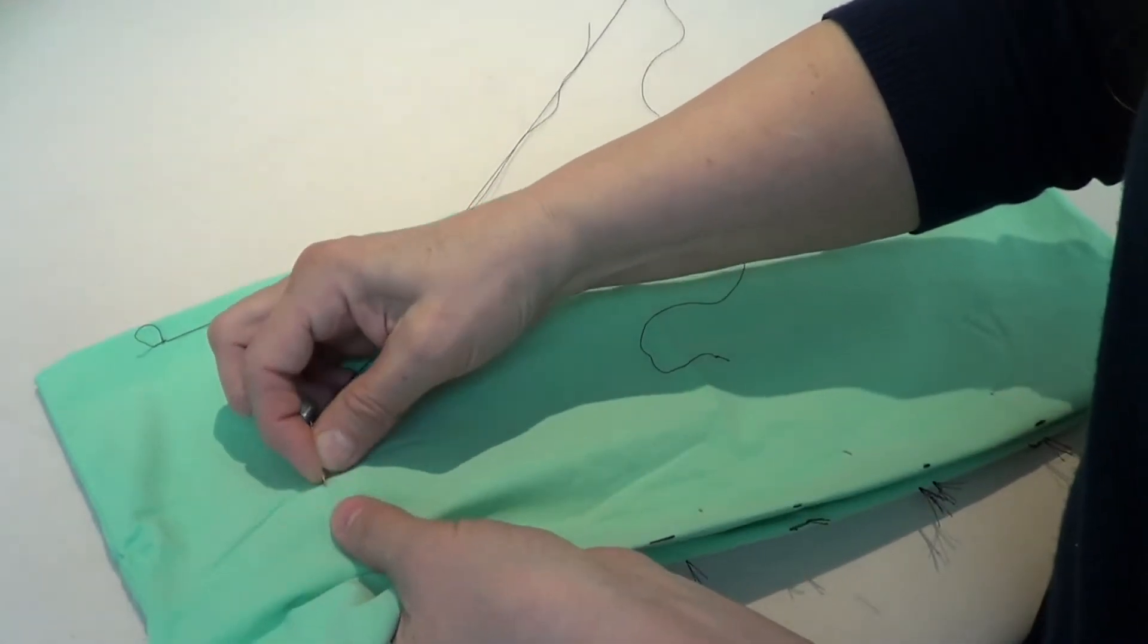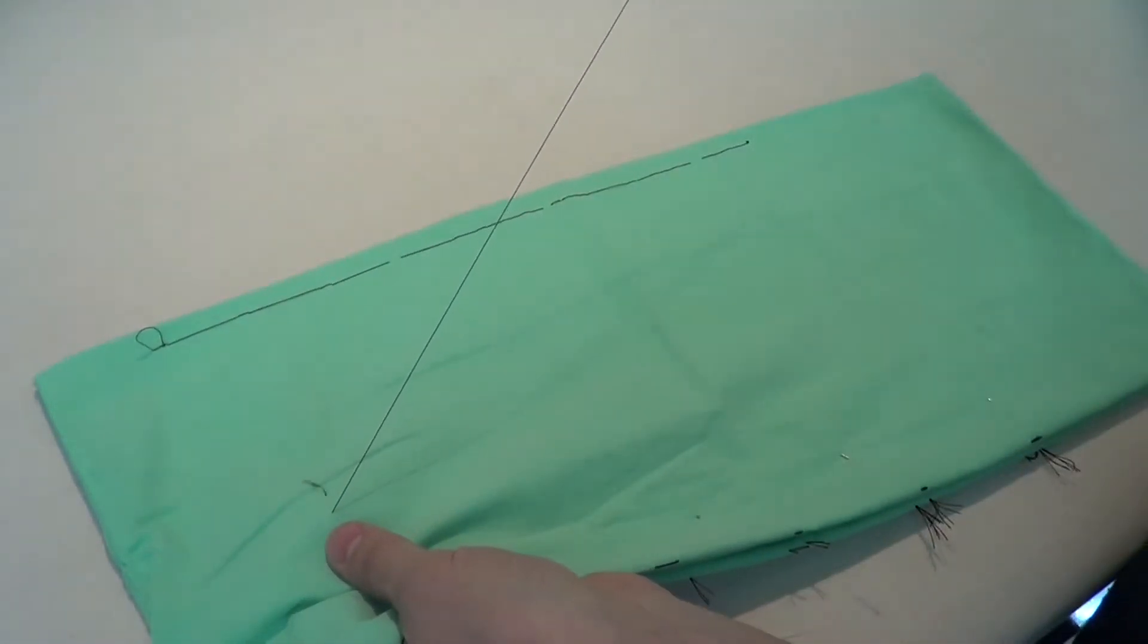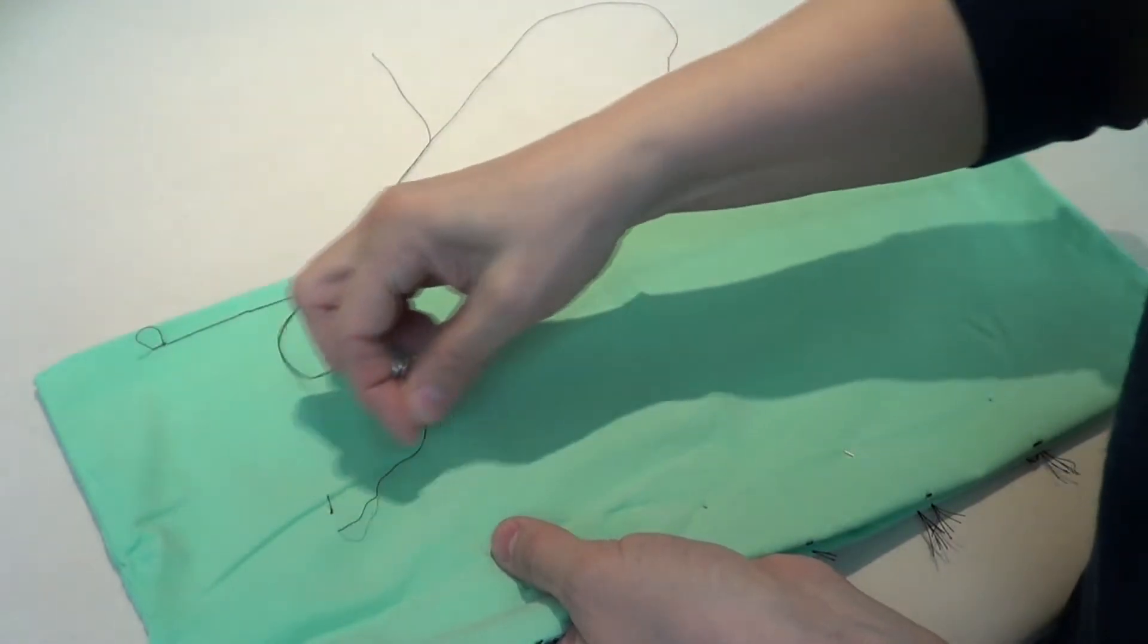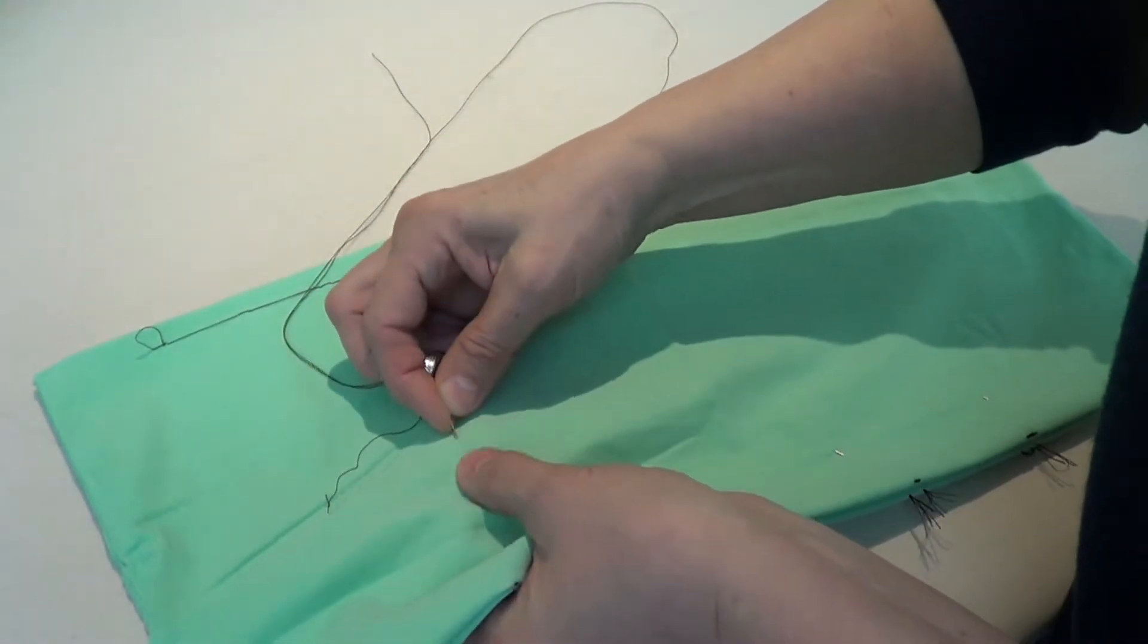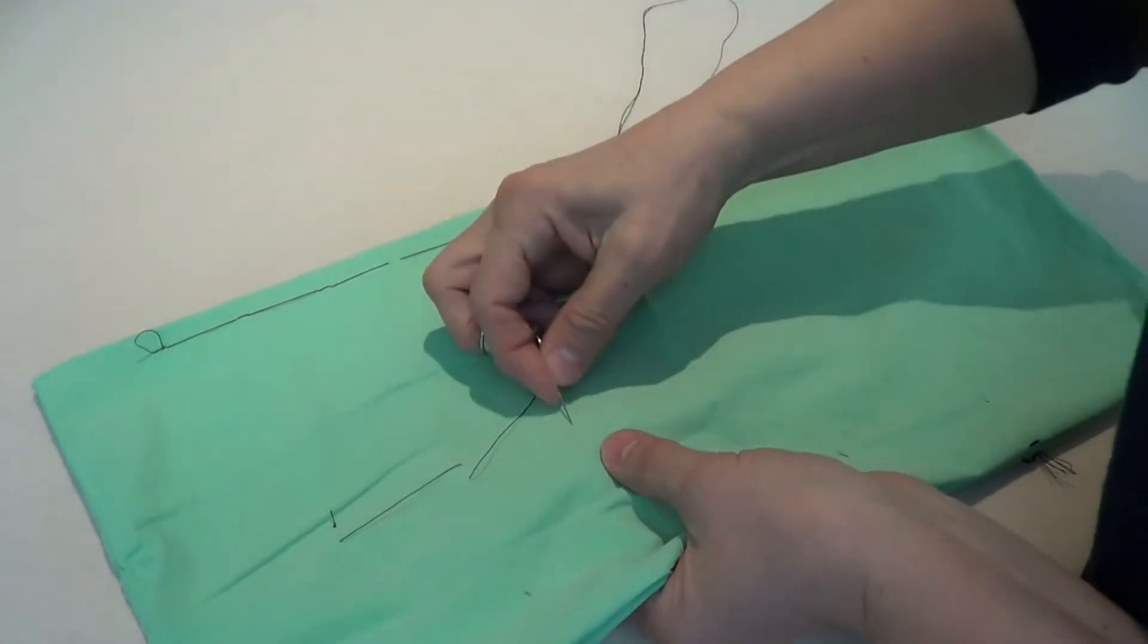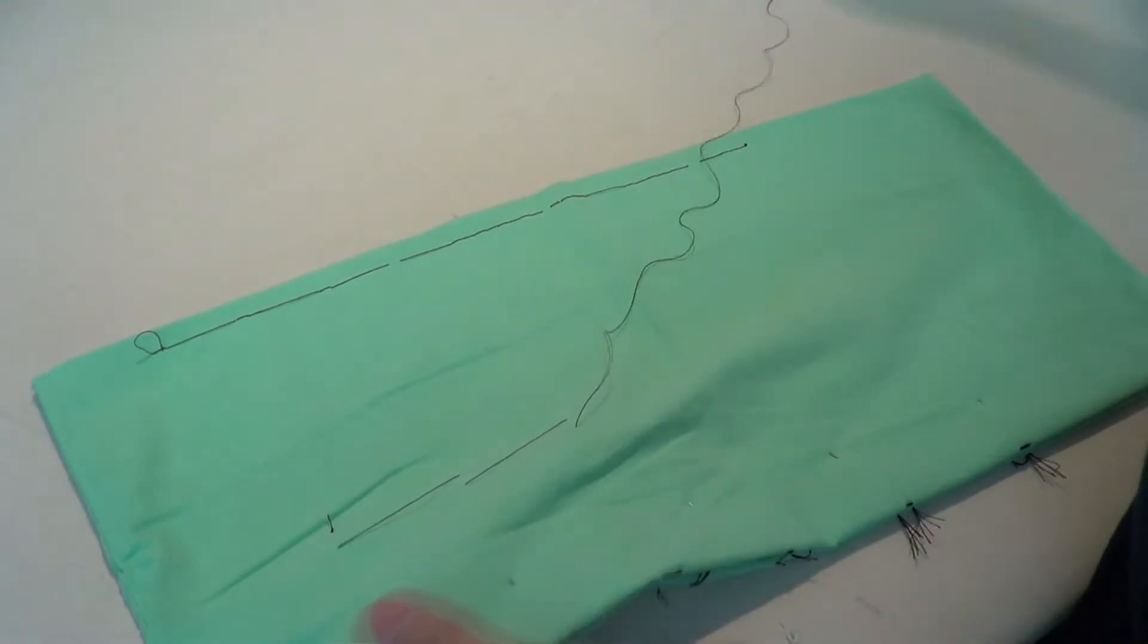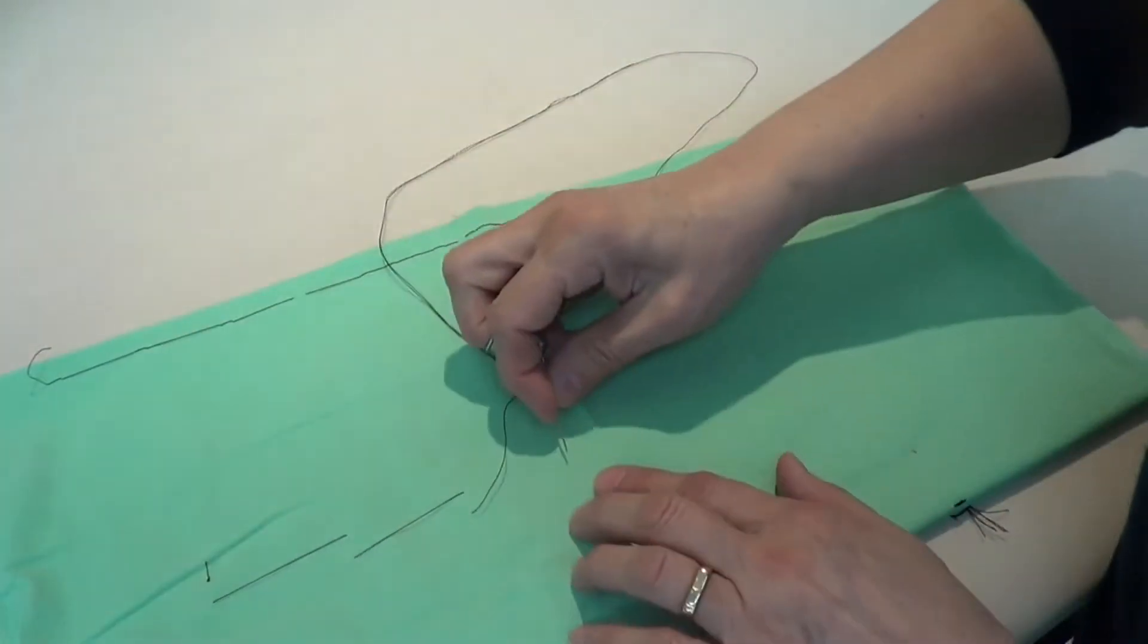So I'm going to go in with my needle and out, and then rather than following a line I'm just going to create this zigzag pattern and I'm going through all the layers of my pillowcase.